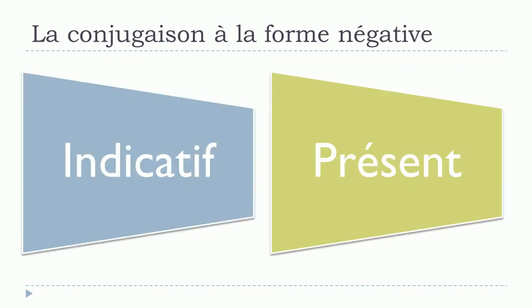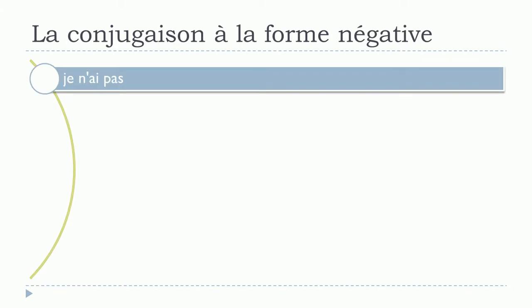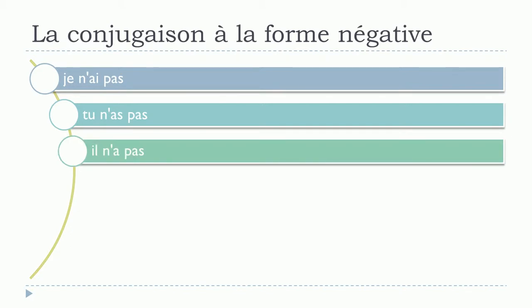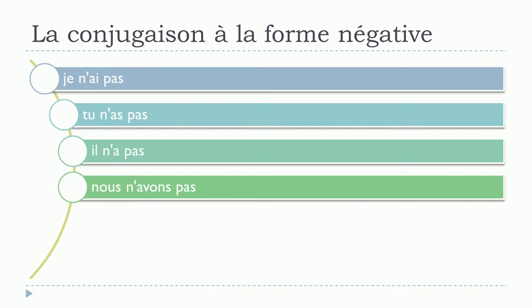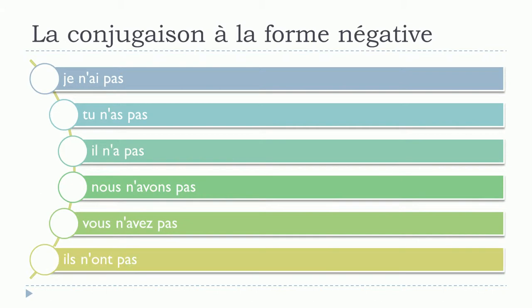Indicatif. Présent. Je n'ai pas. Tu n'as pas. Il n'a pas. Nous n'avons pas. Vous n'avez pas. Ils n'ont pas.